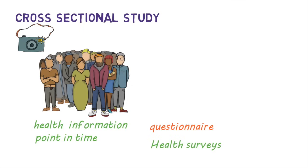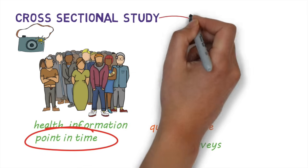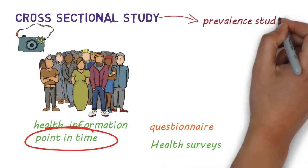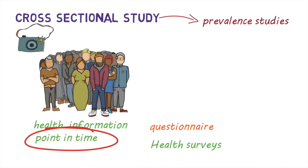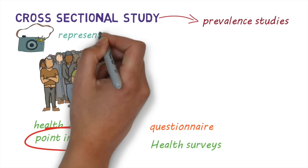Because these studies commonly measure how many people have a disease at a particular point of time, they're also called prevalence studies. It's important to make sure that the selected population is representative of the total population.